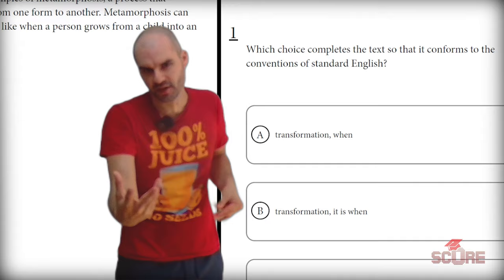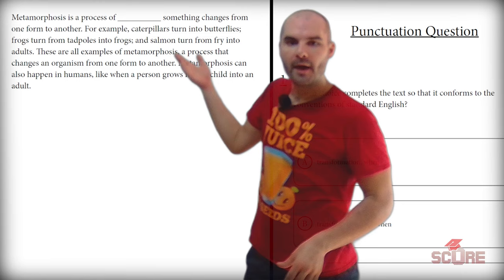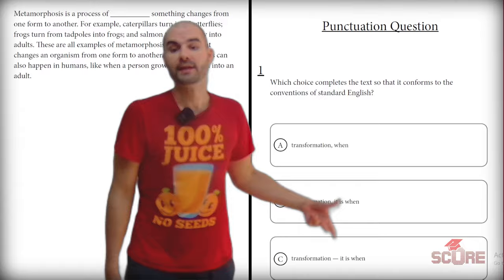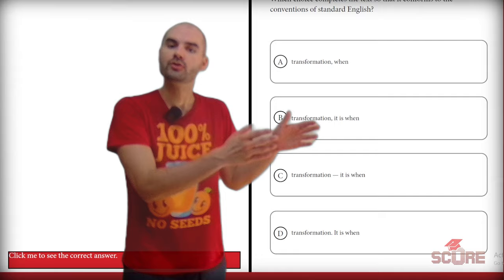So I've got to read the sentence where that blank is. Here I have: metamorphosis is a process of blank. Something changes from one form to another, period. That's all I need to read. So let's take a look at those options. We have: transformation, comma, when; transformation, comma, it is when; transformation, em dash, it is when; transformation, period, it is when — starting a whole new sentence.